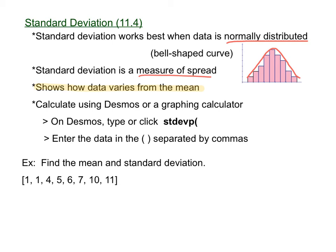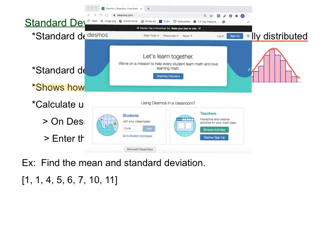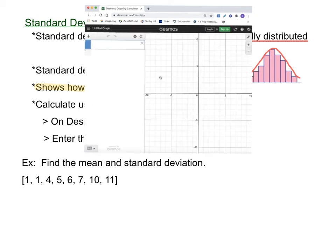Let's look at this example here and review how to use Desmos. Let's find the mean and the standard deviation of this data set. Go to Desmos.com and click the blue graphing calculator button. Once you're there, to find the mean, we can type out the word mean and then put a left parenthesis and then just type the values in the parentheses separated by commas: 1, 1, 4, 5, 6, 7, 10, 11. Hit enter and that gives us a mean of 5.625. Let's round that to one decimal and say the mean is 5.6.